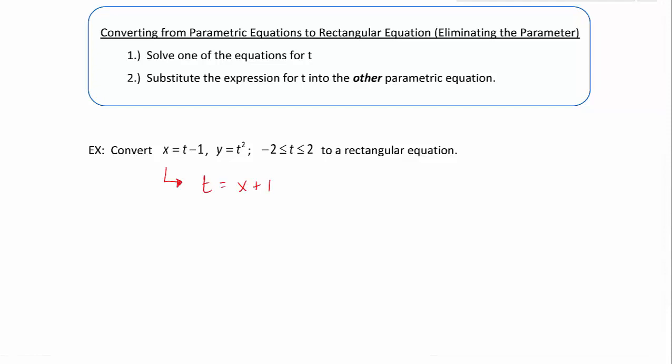Now we're going to take this expression, x plus 1, and substitute it into our other equation for t. We end up with y is equal to x plus 1 squared, and that's our parametric equation.